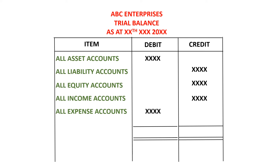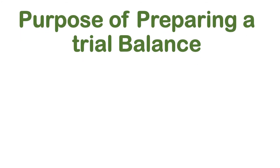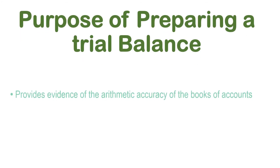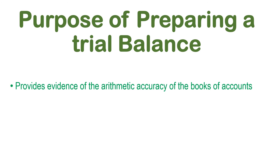As we prepare the trial balance in that format, when we add the total debits and the total credits, those two figures are expected to be the same. When those two figures are the same, it shows that the double entry has been done very well. A trial balance is not a financial statement — it is just prepared to check the arithmetic accuracy of the double entry system of accounting. One of the purposes of the trial balance is that it provides evidence of the arithmetic accuracy of the books of accounts, helping to prove that the double entry has been done correctly.